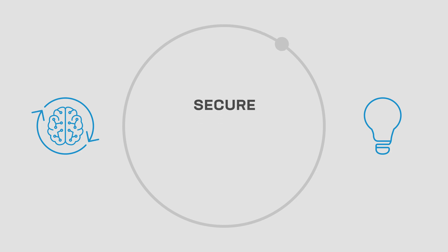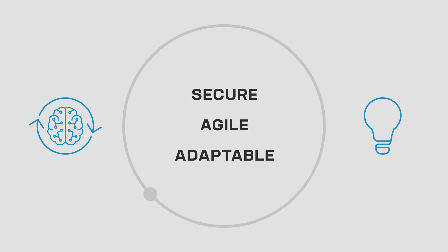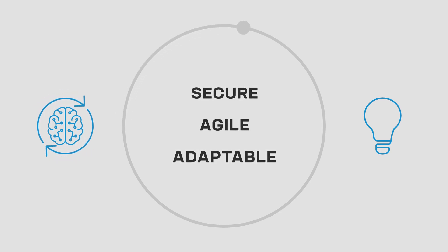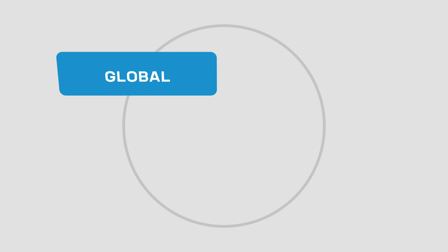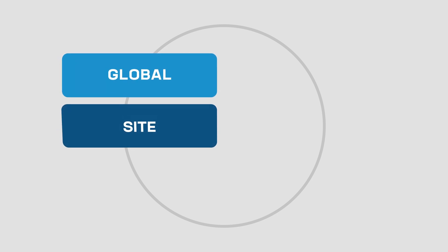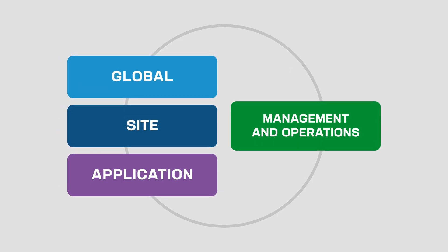To move toward a more secure, more agile, and more adaptable system that's easier to manage across clouds, we recommend provisioning services in four primary tiers: Global, Site, Application, and Management and Operations.